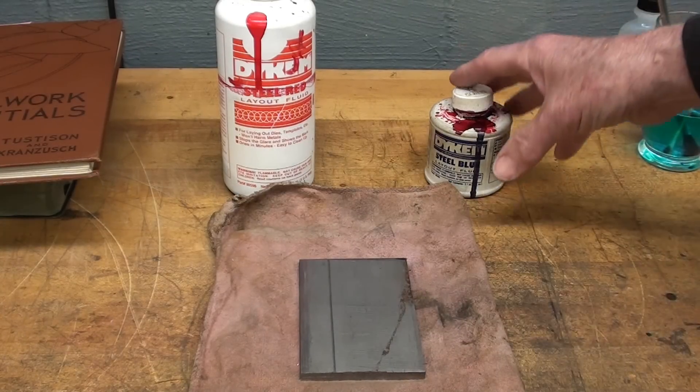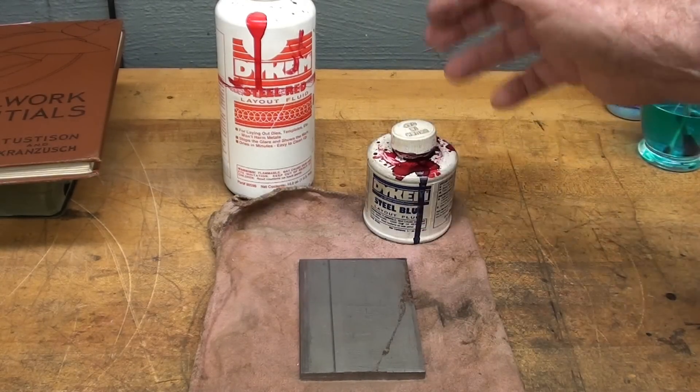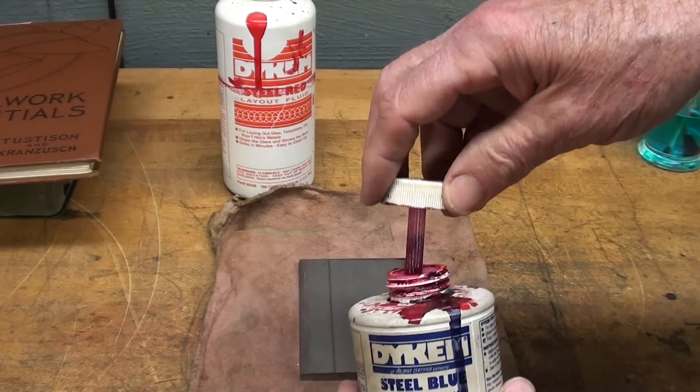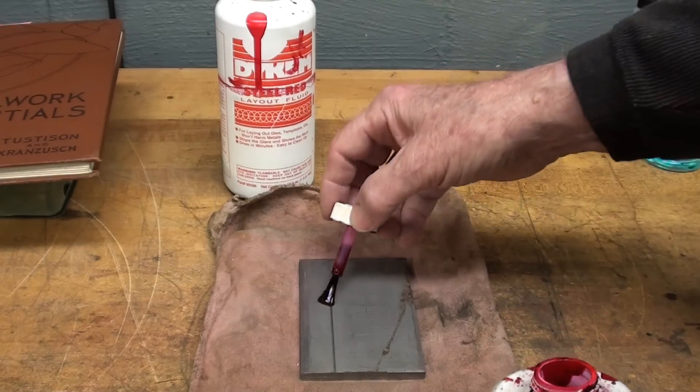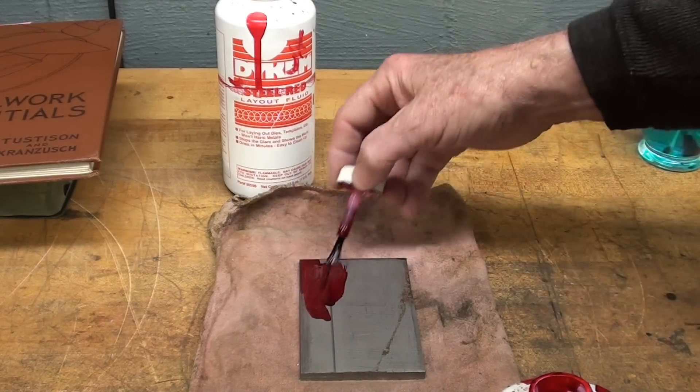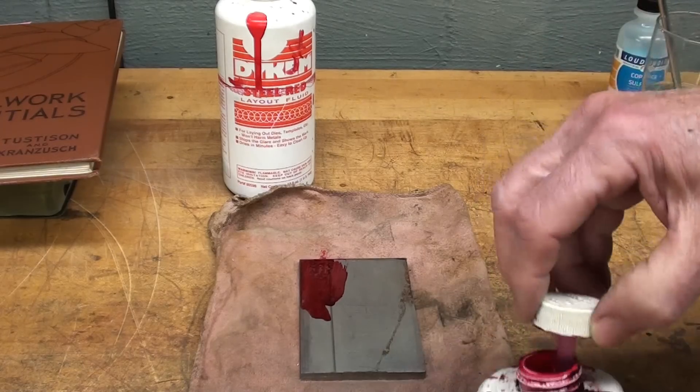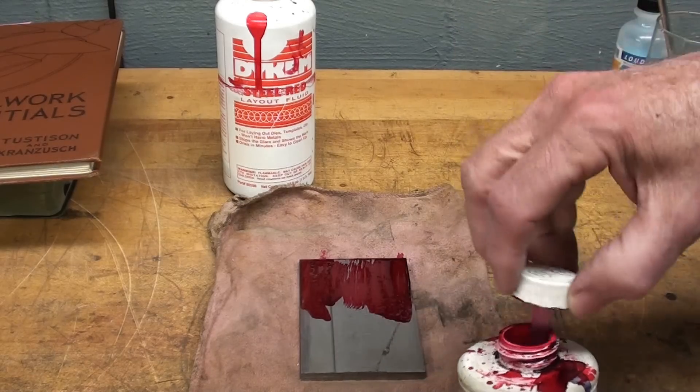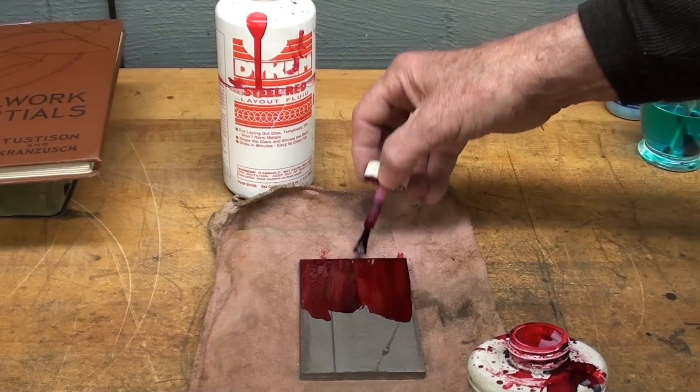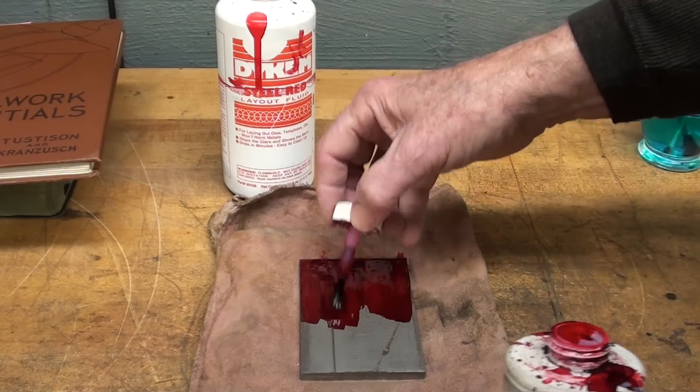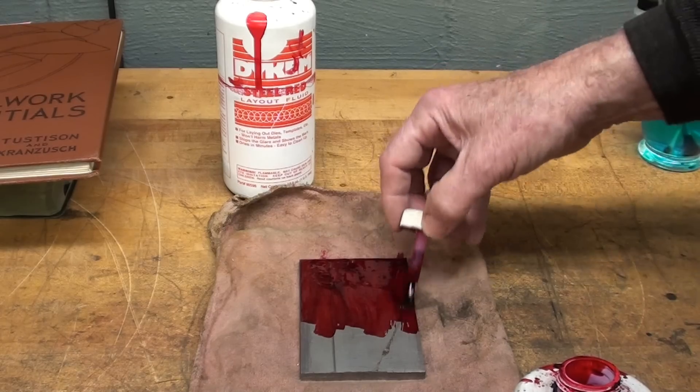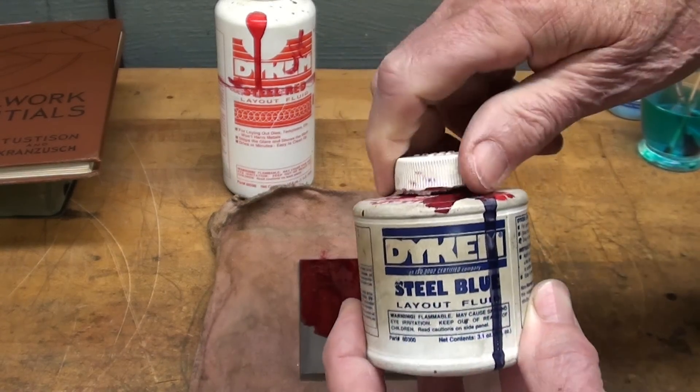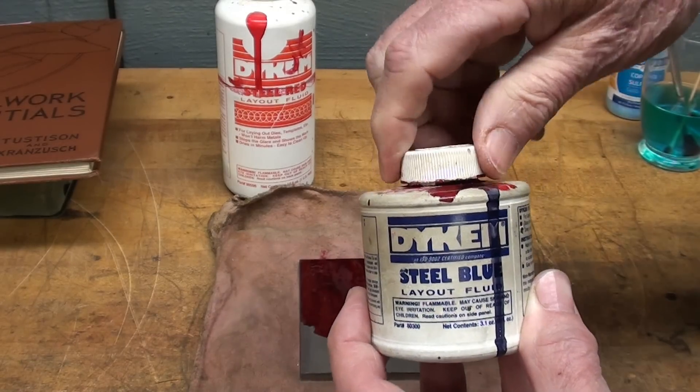In countless videos you've seen me do layout with Dicum Bluing or Dicum Red, a dye that when used on metal allows you to do a layout and the lines show up real well. There's really nothing wrong with this method and I probably will continue to use it, but I'm just showing you the old way of doing it. Different companies make this and it comes in at least red and blue and maybe some other colors.